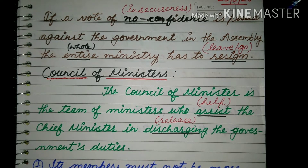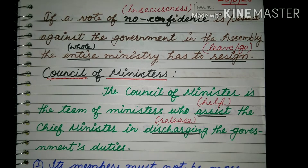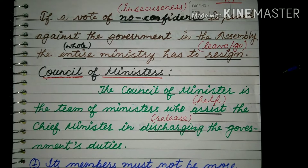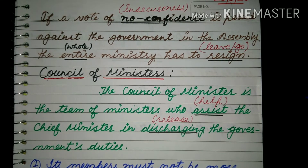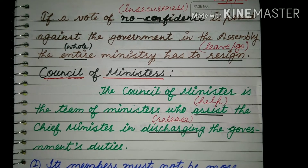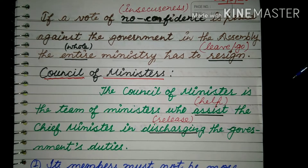Now those are some topics about the chief minister. Now we have to discuss about the council of ministers — how it works, how to form a council of ministers. The council of ministers is the team of ministers who assist the chief minister in discharging the government duties — जो मंत्री परिषद है वो एक team होती है मंत्रियों की, जो help करती है chief minister को government की जो कर्तव्य हैं उनको release करने में।